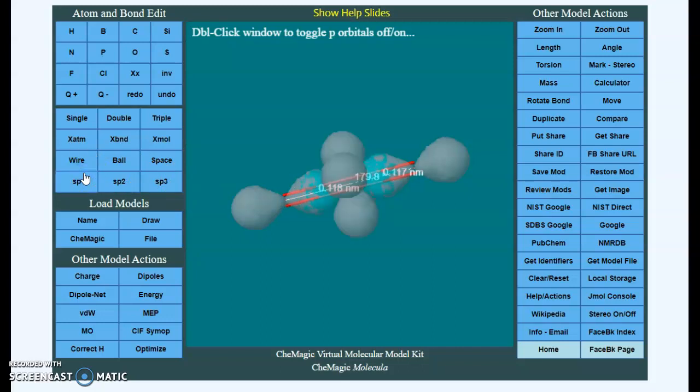If we click on sp, now we see more orbitals. So the carbon is sp hybridized because we can see the orbitals. If you want to go back to the ball view, you can see those orbitals.